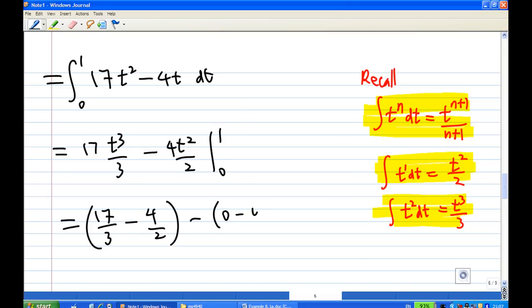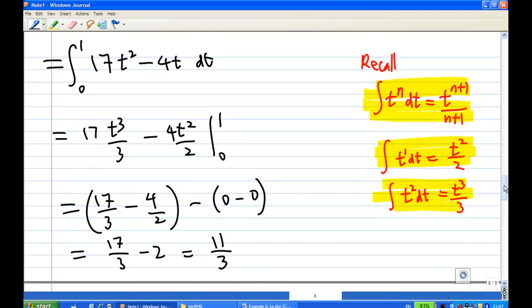So you are going to have 17 over 3 minus 2, which is 17 over 3 minus 6, will get 11 over 3. And this will be the integral. This will end the recording.